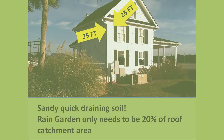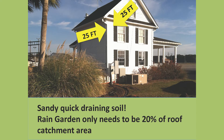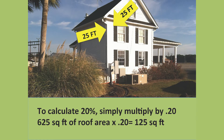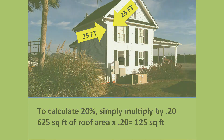Since you are in sandy soil, your rain garden needs only to be 20% the size of your catchment area, because sandy soils drain quickly. Therefore your rain garden can be as little as 125 square feet.